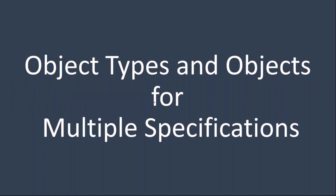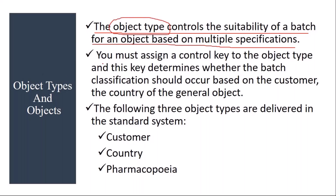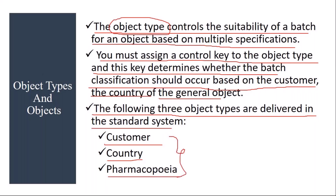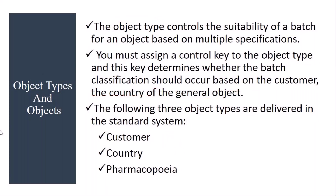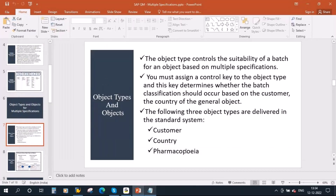Before checking in the system, we need to understand object types and objects for multiple specifications. The object type controls the suitability of a batch for an object based on multiple specifications. You must assign a control key to the object type, and this key determines whether batch classification should occur based on customer, country, or some other option. The following three object types are delivered in the standard system: customer, country, and pharmacopoeia. In the example I explained, the object type is country.